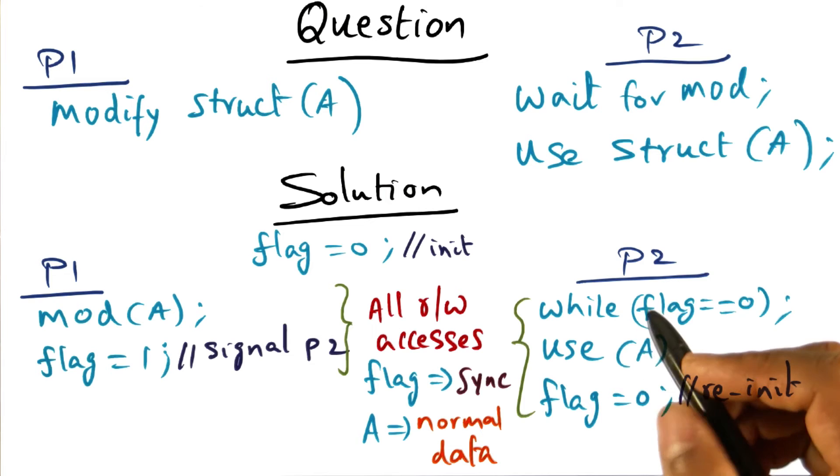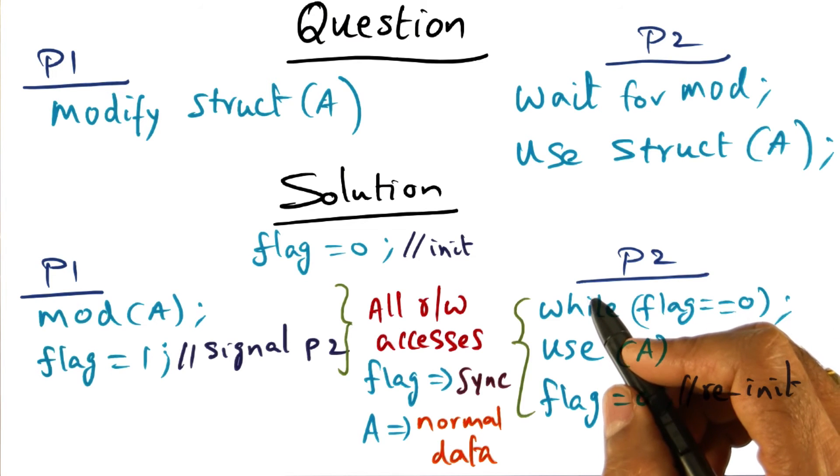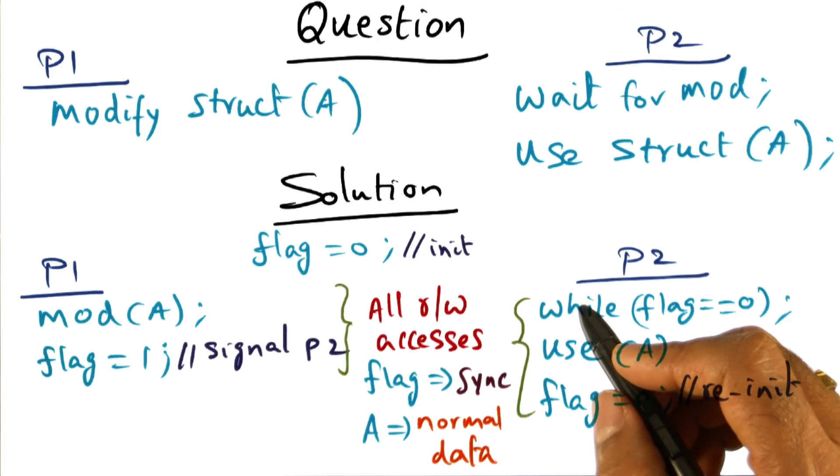And in fact, when we look at certain implementation of barrier algorithms later on, you'll find that this is all that is needed from the architecture in order to implement some of them.